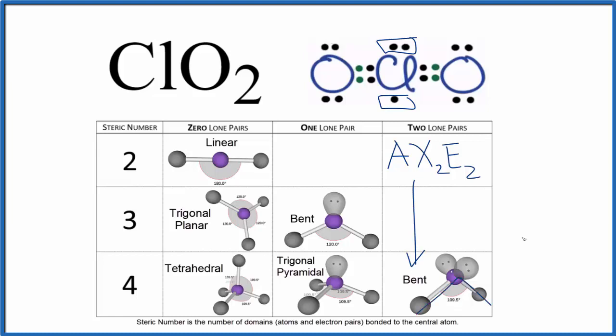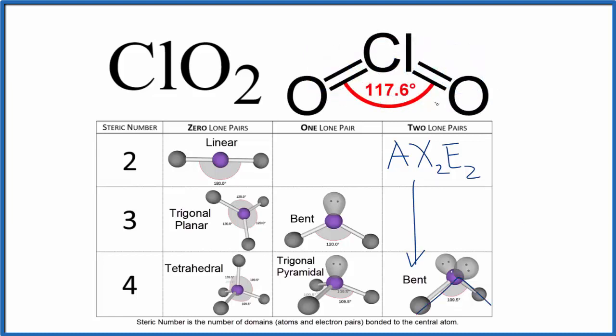Ideal bond angle, 109.5. The actual bond angle will be 117.6 degrees between these oxygen atoms here. So different than the ideal bond angle we found here for ClO2.